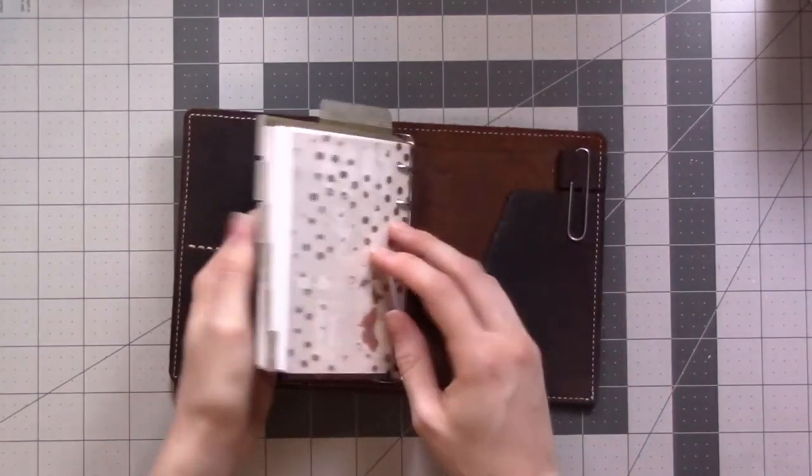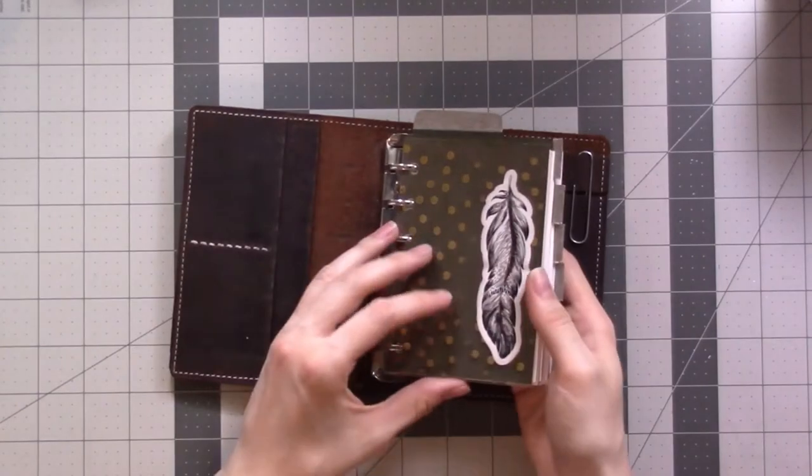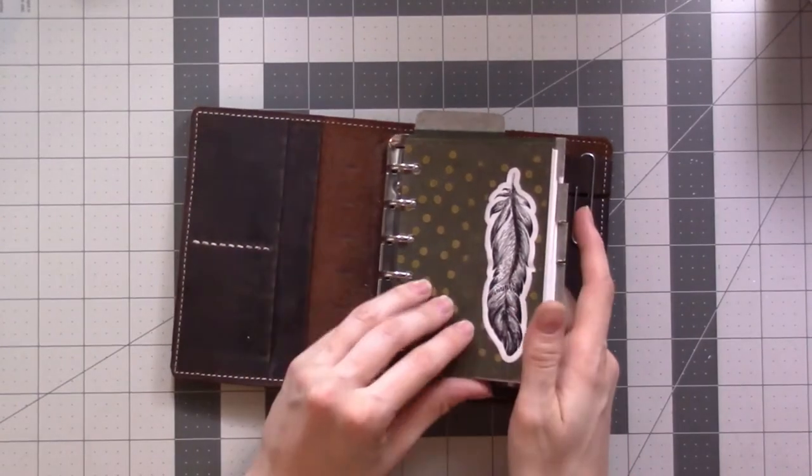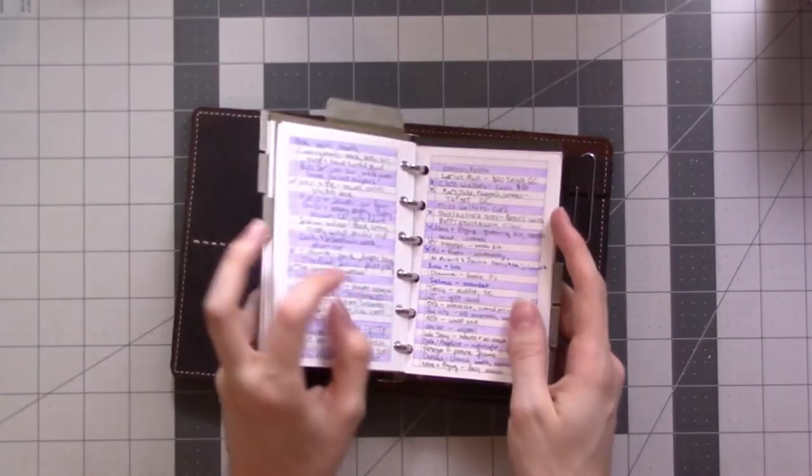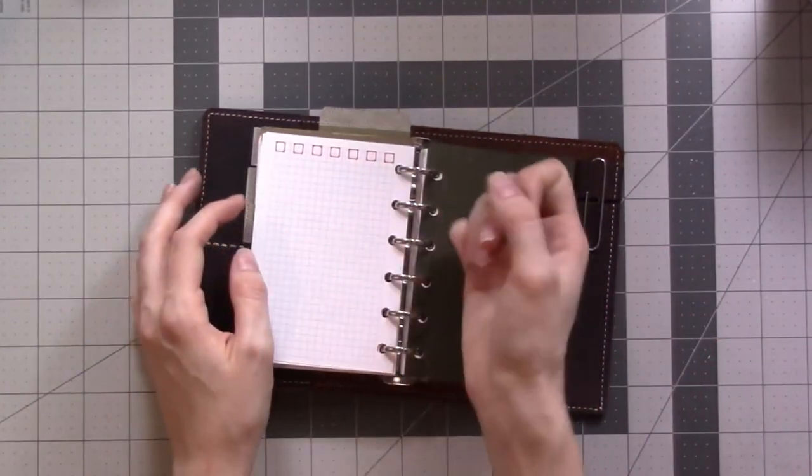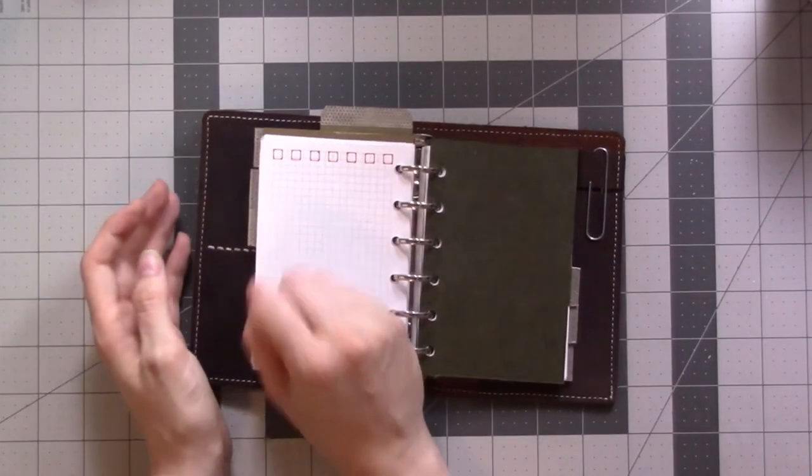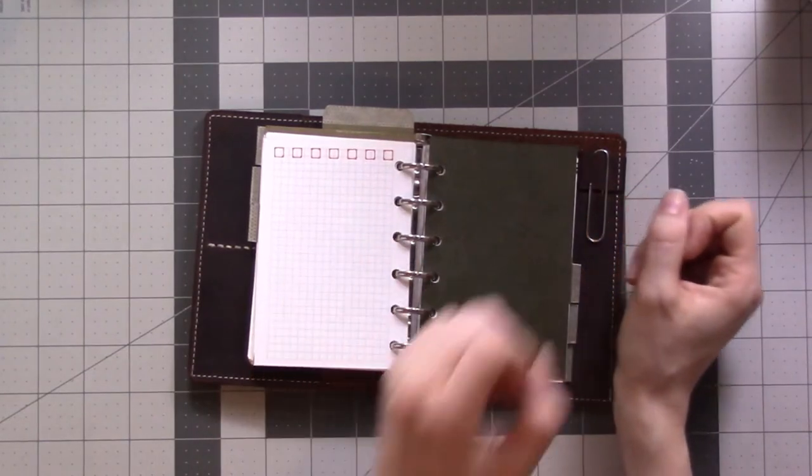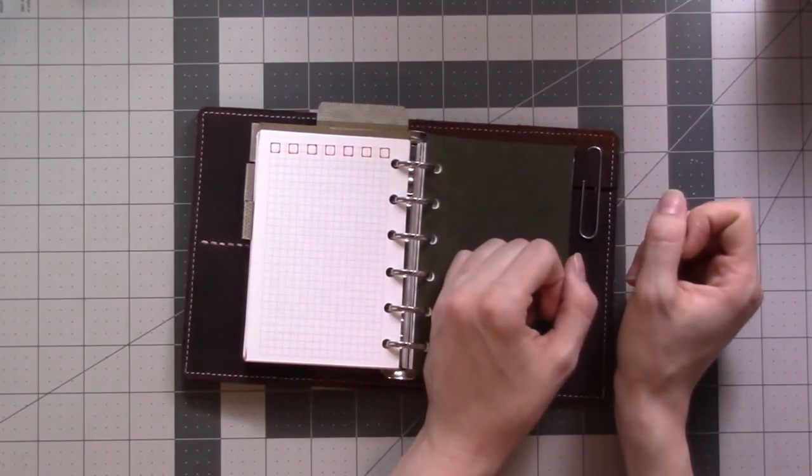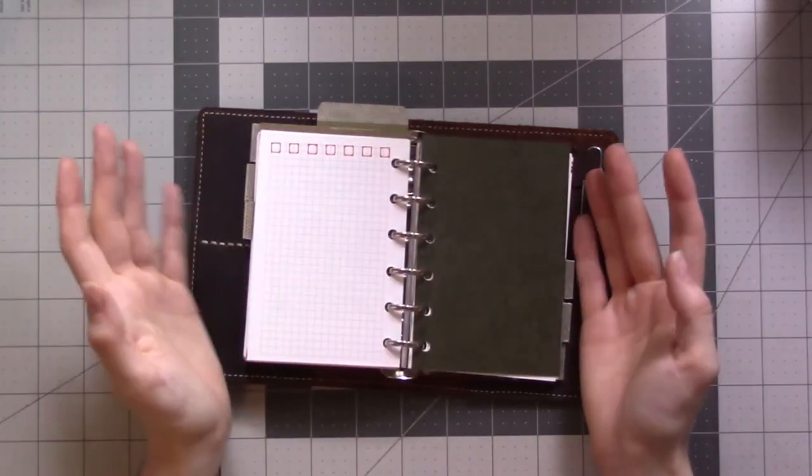There's pros and cons to every system. The negatives to the ring planner mostly is that it's really hard to write on the left hand side of the page because these rings get in your way. If you're left-handed then it would be the opposite direction and up to you whether that's a problem.